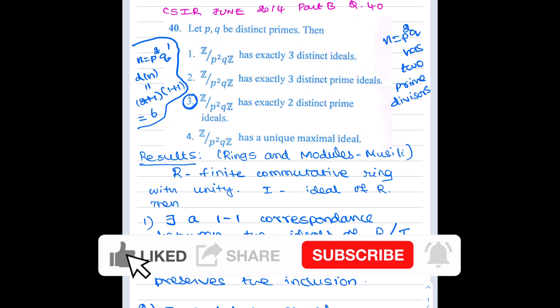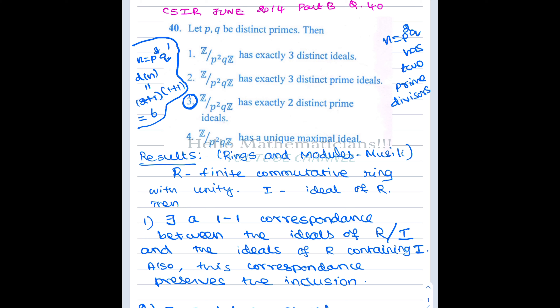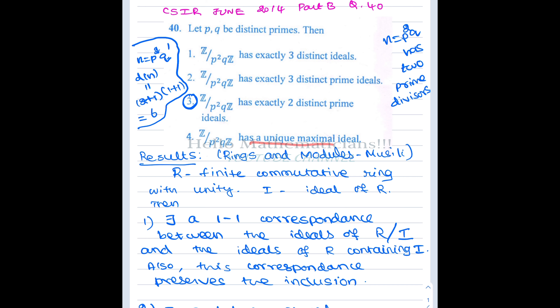Hello mathematicians. Today we see one nice problem asked in ring theory about ideals, prime ideals, and maximal ideals. Let P and Q be two distinct primes. We are asked to find the number of ideals in the ring Z mod P²Q. The options are: it has three distinct ideals, three distinct prime ideals, two distinct prime ideals, or it has a unique maximal ideal.